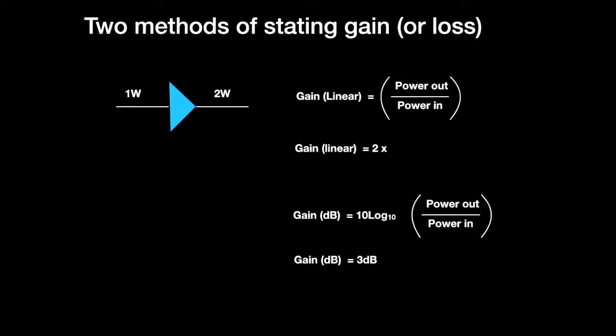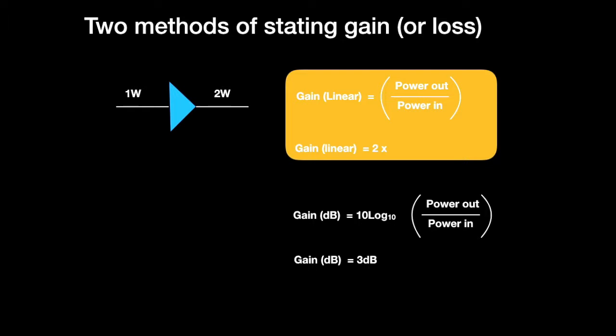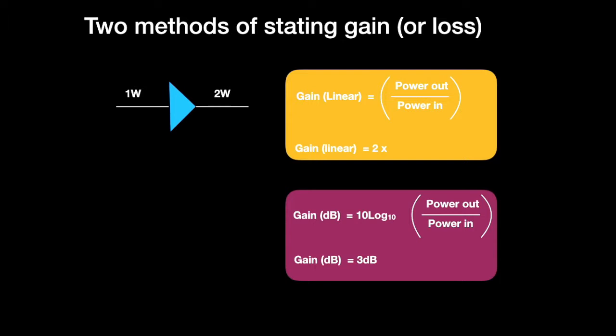So, reiterating, there are two ways of looking at a gain, or indeed a loss. In yellow there, we have the linear representation of the gain, 2 times, 3 times, 6 times. And here, we have the decibel representation of the gain. It could be 3 dBs, would be twice, 6 dBs, 4 times, etc. And we've learnt some of those ratios for the foundation and intermediate courses.